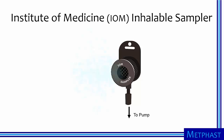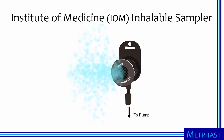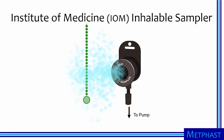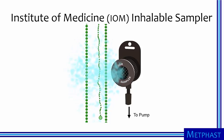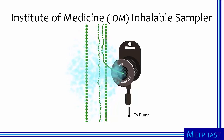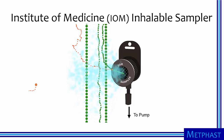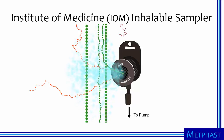In this animation, we can see air entering the inhalable sampler developed by the Institute of Medicine, or IOM. The motion of very large particles is dominated by gravity settling, causing them to be unaffected by the airflow entering the sampler. Approximately 50% of 100 micrometer particles will be aspirated into the inlet, mimicking the behavior of the human nose and mouth. Smaller particles are aspirated with increasing efficiency as they are more easily carried by the airflow into the sampler.